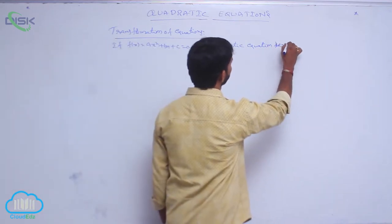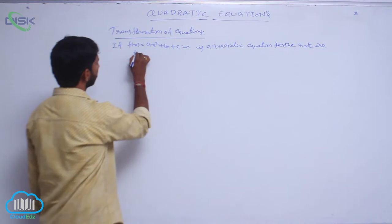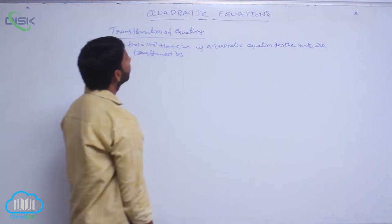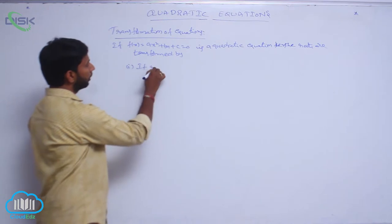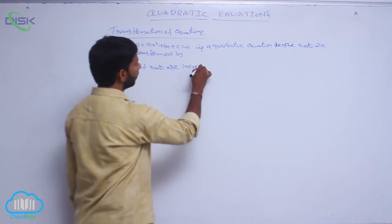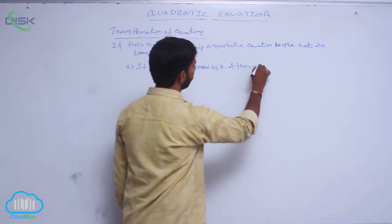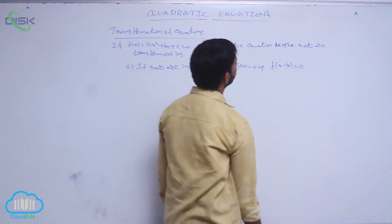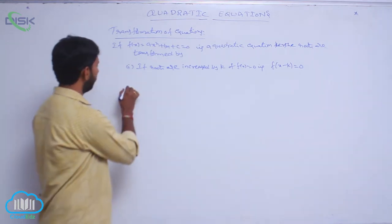The roots are transformed by the following rules. First, if roots are increased by k, then f of x equal to 0 becomes f of x minus k equal to 0.